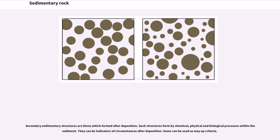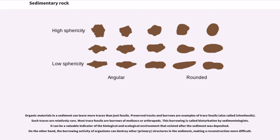Secondary sedimentary structures are those which formed after deposition. Such structures form by chemical, physical and biological processes within the sediment and can be indicators of circumstances after deposition. Organic materials in a sediment can leave more traces than just fossils. Preserved tracks and burrows are examples of trace fossils. Most trace fossils are burrows of mollusks or arthropods. This burrowing is called bioturbation by sedimentologists. It can be a valuable indicator of the biological and ecological environment that existed after the sediment was deposited. On the other hand, the burrowing activity of organisms can destroy other structures in the sediment, making a reconstruction more difficult.